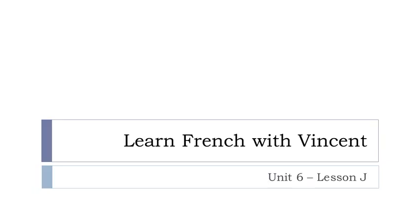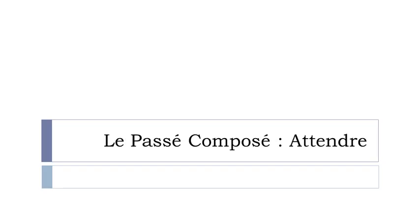Bonjour à tous and welcome to Learn French with Vincent. It's Unité 6, Leçon J. And in this lesson we'll discover together le passé composé and the verb is attendre. Attendre means 'to wait.' We'll see the past form — just some reviews that we are doing, but they are really important.